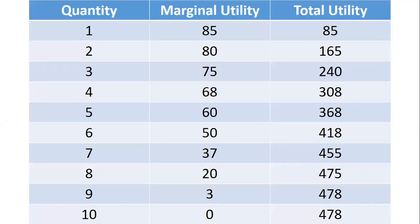Here we're having the table, with the quantity — meaning the number of bites. Quantity one is the first bite, two is the second bite. And we're having the marginal utility. Marginal utility is the additional satisfaction gained from the consumption or use of one more unit. For the second bite, the additional satisfaction I gained is 80.